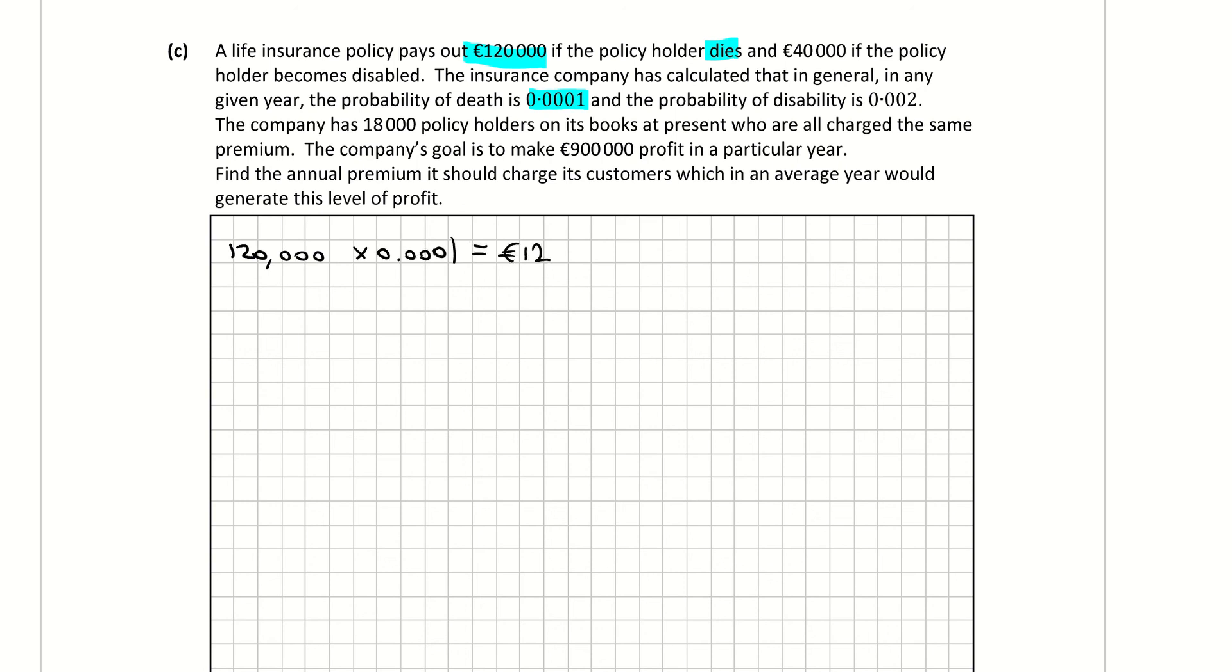Then we have the €40,000 if you become disabled. And the probability of becoming disabled is 0.002. So let's find that expected value. So we have €40,000 multiplied by 0.002, which is €80. So €80 must be set aside for someone becoming disabled. If we add them together, we get €92. That €92 basically stands for the average payout per customer.